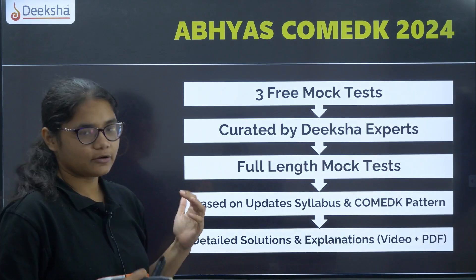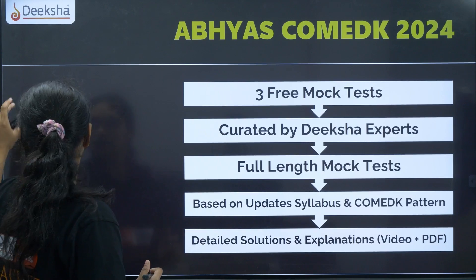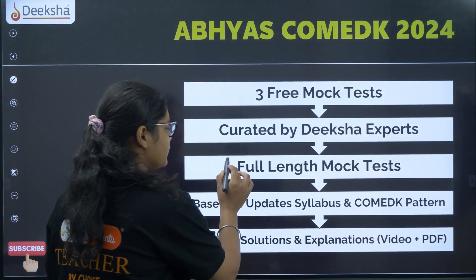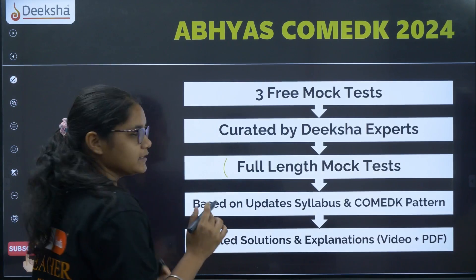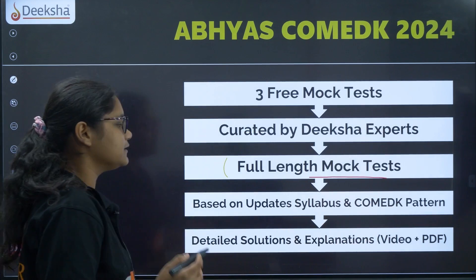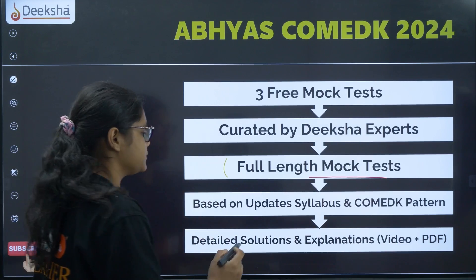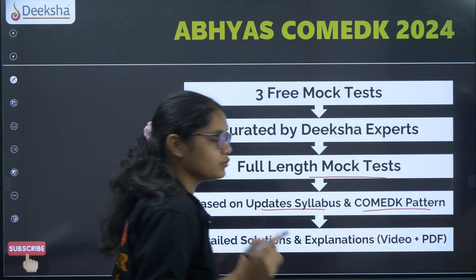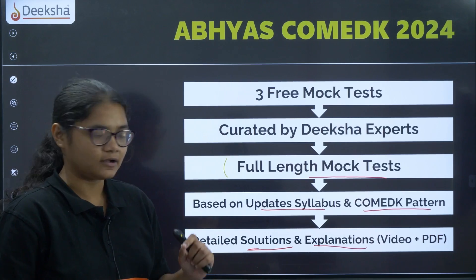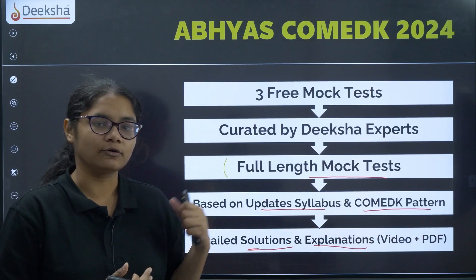You will be having three mock tests which are absolutely free, designed by our expert faculties. These are full mock tests with all 180 questions including physics, chemistry and maths. The mock tests are based on the updated syllabus with no questions from the deleted portion, and according to the Comet K pattern. Detailed video solutions and PDF solutions will be uploaded for all mock tests.